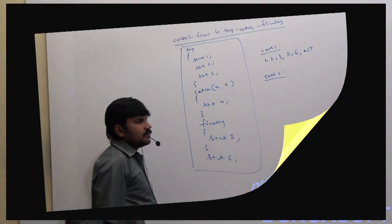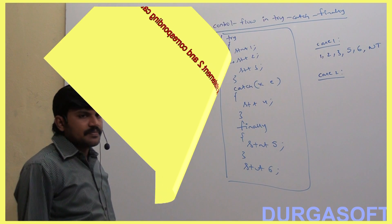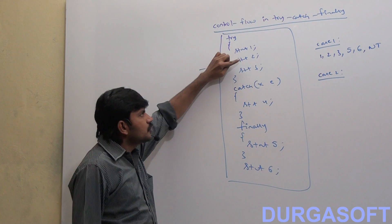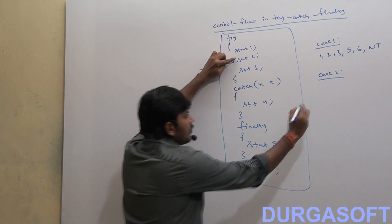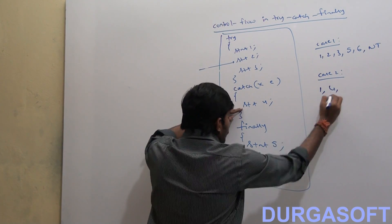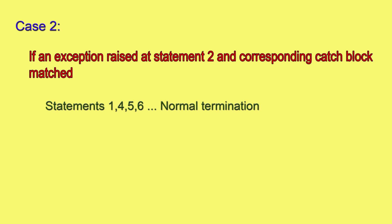Case 2: If an exception rises at Statement 2, the corresponding catch block is matched. So the flow is: 1, then the exception at 2, then catch block executes Statement 4, then 5 and 6. Is it normal or abnormal termination? Normal termination, because the exception was handled by the catch block.